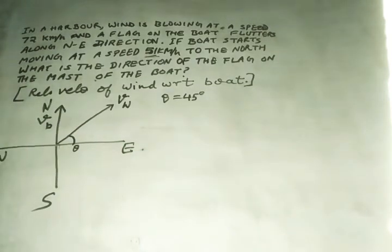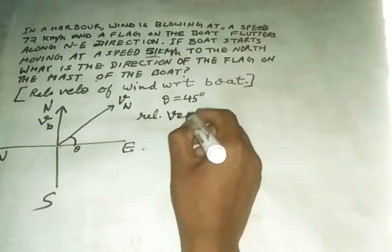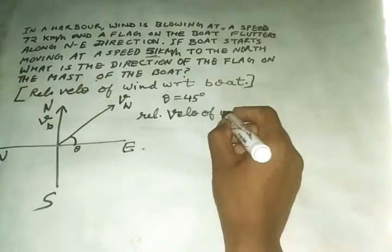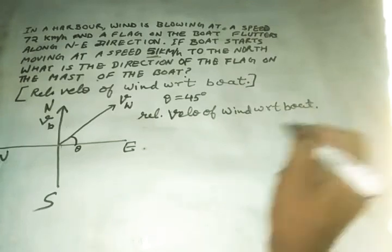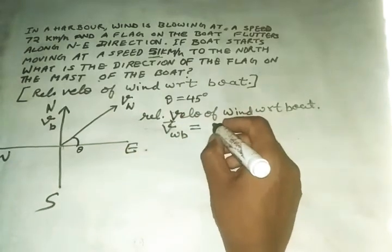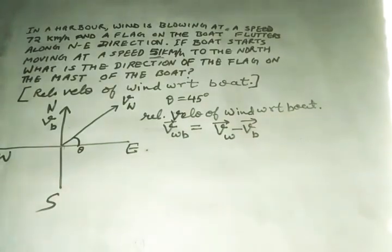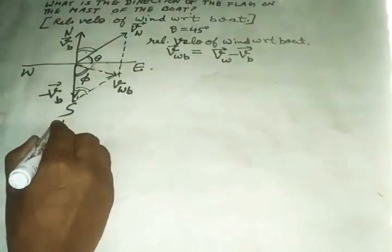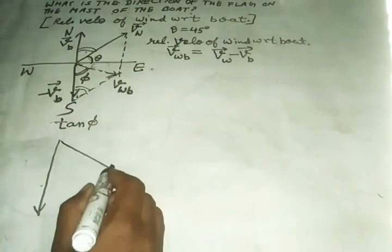We need to find the velocity, relative velocity of the wind with respect to boat. What will happen? The vector sign, the vector. So now I will take and write this, then I will write this. This is VB. Now I can write this, VWB.